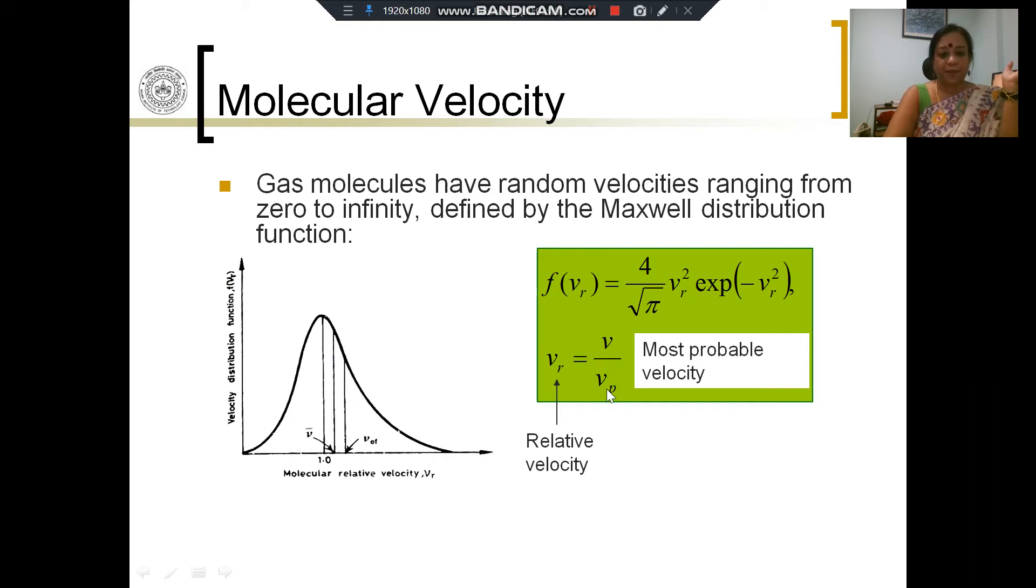This is basically a bell-shaped curve and we can define what is called the molecular relative velocity. The molecular relative velocity vr is given by v divided by vp where vp is the most probable velocity, and at v equal to vp the relative velocity equals 1.